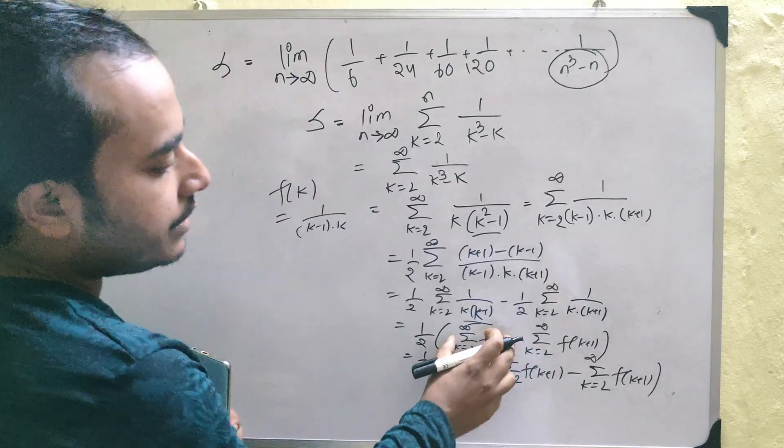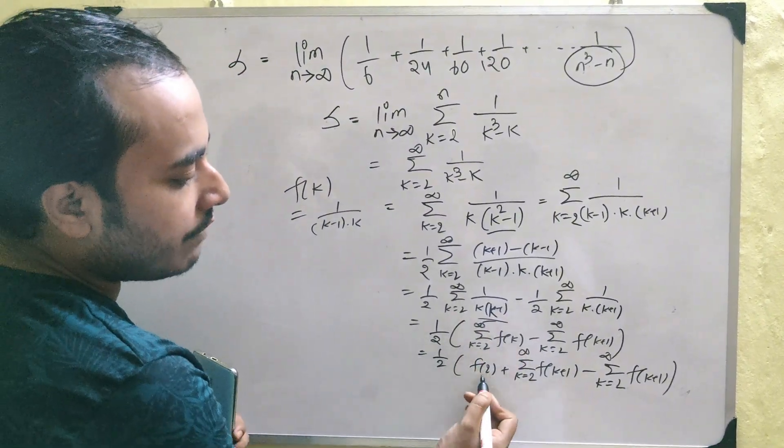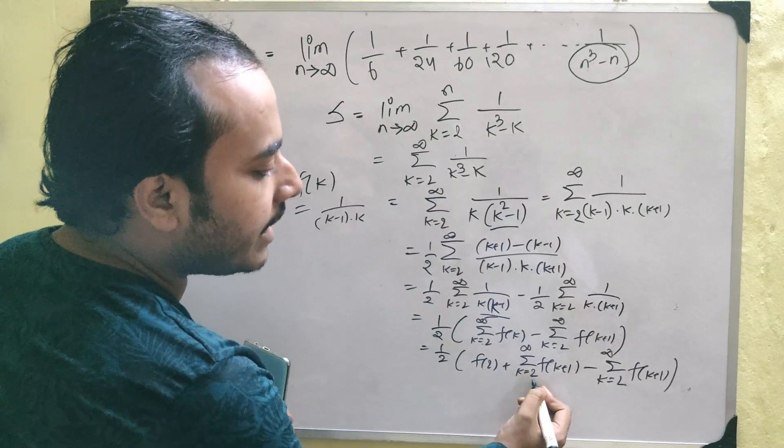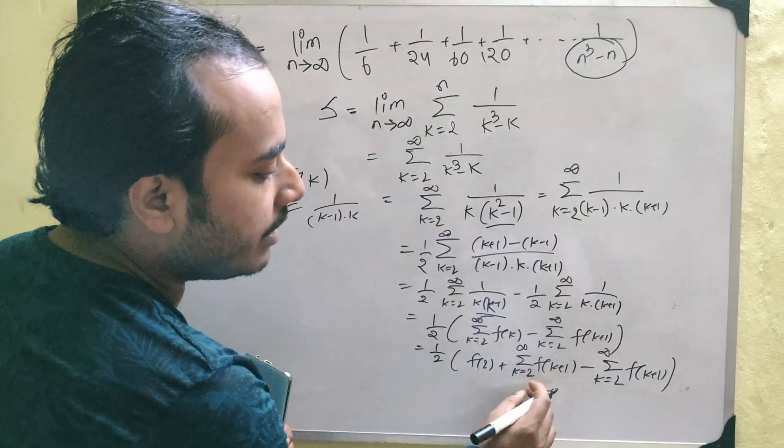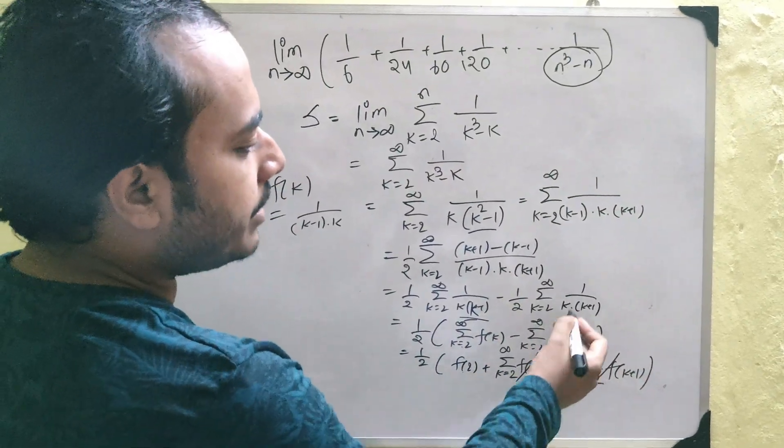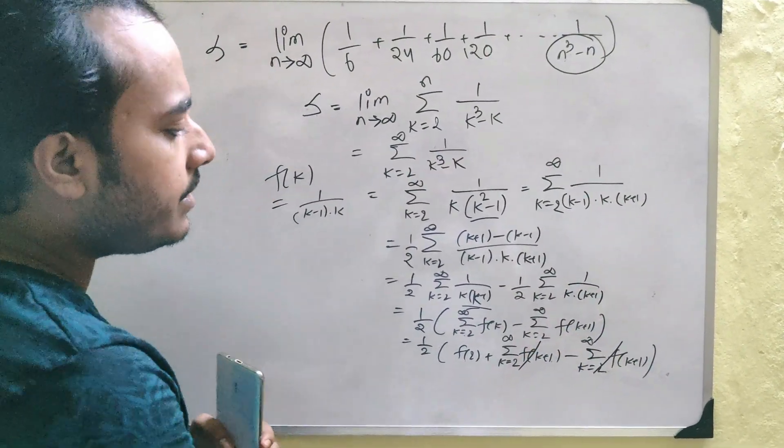Why is that? Because we just took the first term which is k equals to 2 f of 2 and the next term should be f of 3 but we are rather writing it as k equals to 2 to infinity f of k plus 1. Notice that putting 2 gives you a 3 and obviously, these two summations cut out and they are also convergent because it is a telescopic series